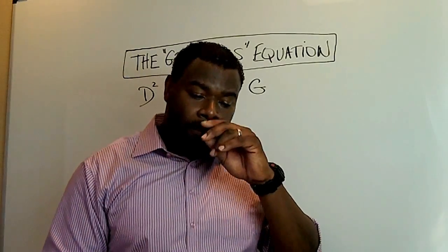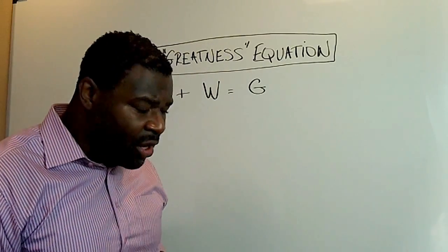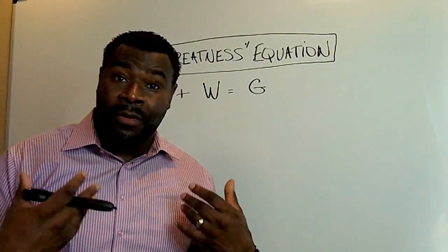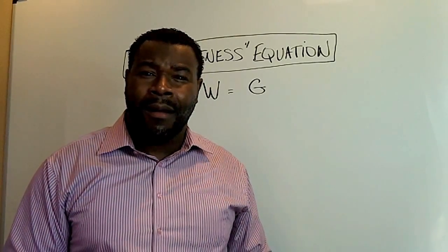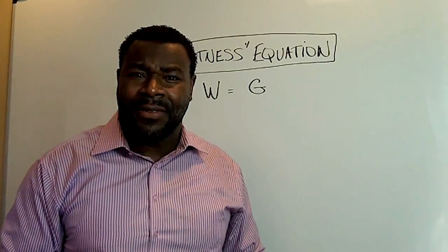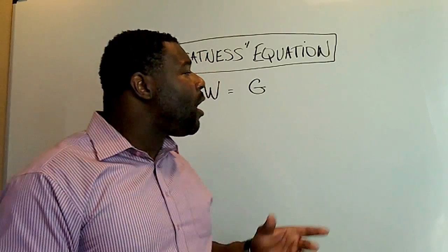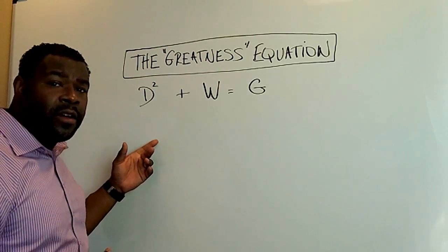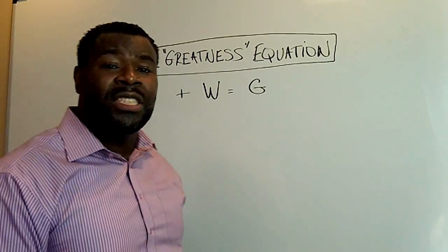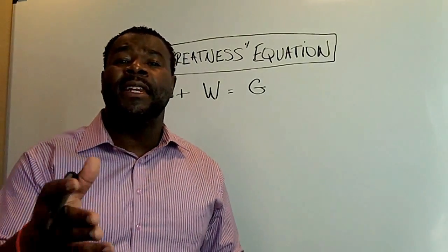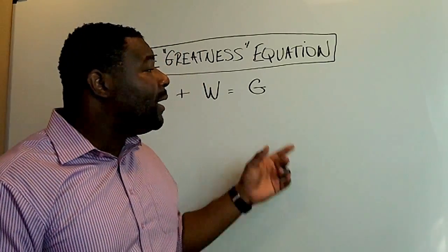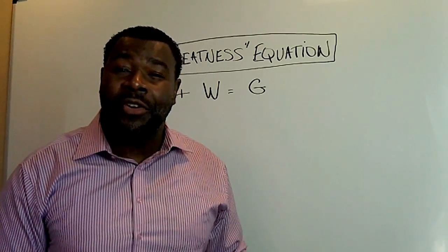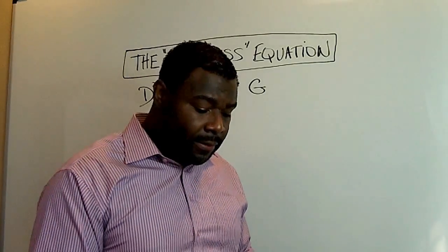Today I want to talk to you about an equation I came up with doing a lot of my research and talking to people who I believe are living that true greatness. D squared plus W equals G. D squared plus W equals G, and G being, of course, greatness. So let's dive in.